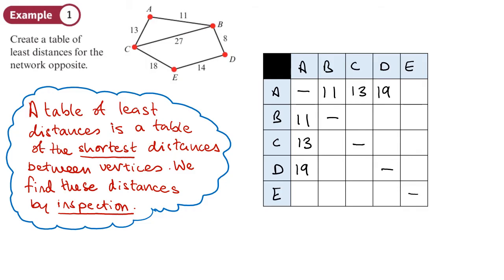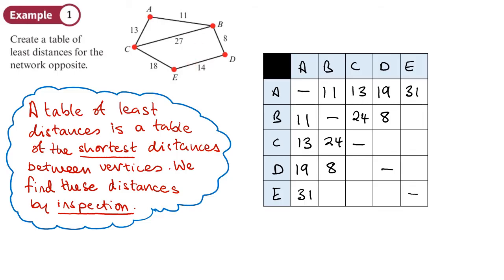For A to E: going via C gives 13 plus 18, which is 31; going via D gives 19 plus 14, which is 33. So the shortest route is 31. Then B to C: this is 24 versus 27, so the least distance is 24. B to D is just 8. For B to E: choices are 27 plus 18, or 8 plus 14, or 11 plus 13 plus 18. The shortest is 8 plus 14, giving 22. So B to E is 22.